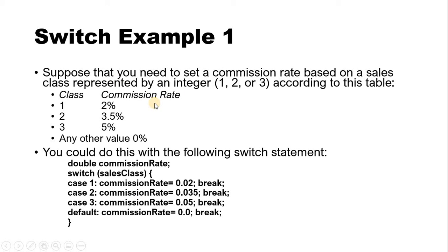For example, we have sales class and commission rate. Sales class can be 1, 2, or 3. In the switch statement: case 1 sets commission rate to 0.02, then break; case 2 sets commission rate to 0.035, then break; case 3 sets the respective rate, then break. If none of the cases match, the default sets commission rate to 0, then break. This is a simple example of switch case.